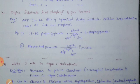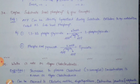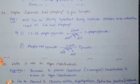Define substrate level phosphorylation and give examples. ATP directly synthesized during substrate oxidation in metabolism is known as substrate level phosphorylation. Generally ATP is generated via oxidative phosphorylation, but it can also be synthesized during substrate oxidation directly. Examples: First, 1,3-bisphosphoglycerate conversion to 3-phosphoglycerate — in the presence of kinase enzyme, ADP is converted to ATP by accepting phosphate from 1,3-bisphosphoglycerate. Second, phosphoenolpyruvate (PEP) conversion to pyruvate in the presence of kinase — ADP accepts inorganic phosphate from PEP to make ATP. These are the questions from Unit 2.